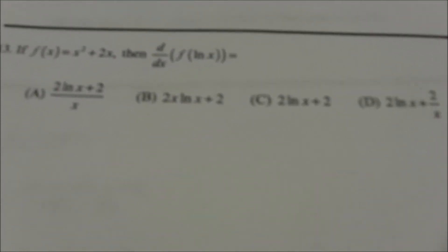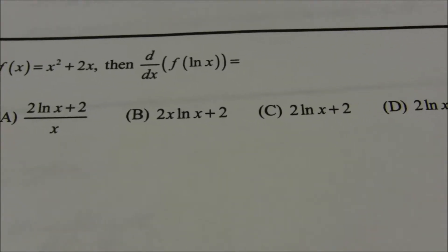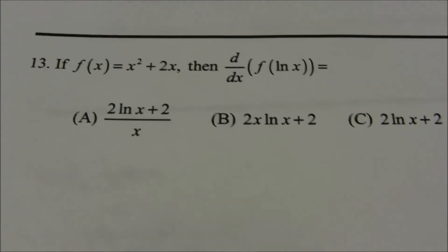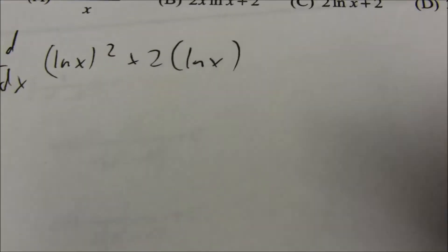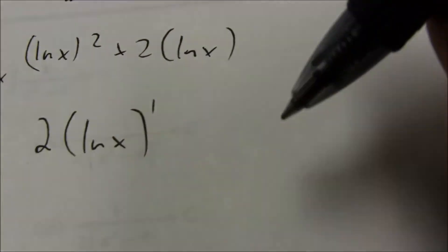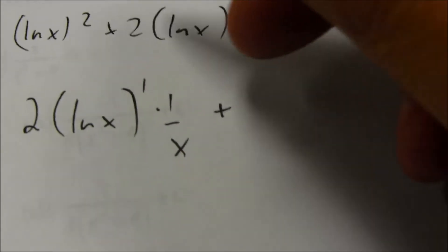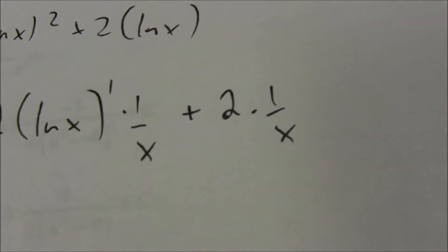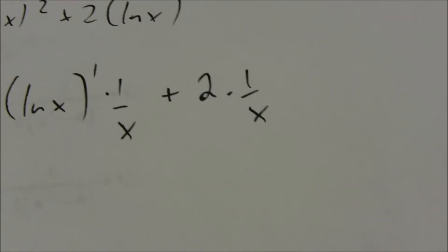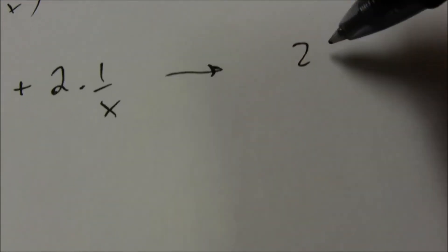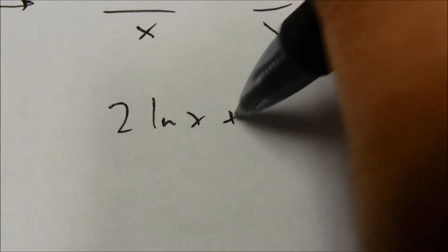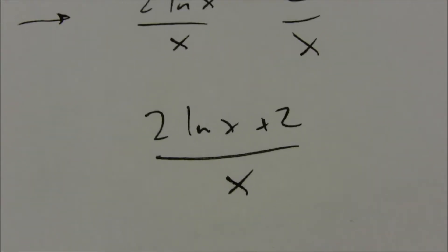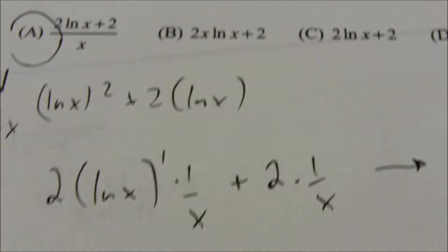Number 13: we want the derivative of f of ln of x, which is ln of x squared plus 2 times ln of x. Taking the derivative: the outside function is squaring, so by the power rule, 2 times ln of x times the derivative of the inside function, 1/x. Then take the derivative of the second part: 2 times 1/x equals 2/x. Writing it as 2 ln x over x plus 2 over x, combining over the common denominator gives 2 ln x plus 2 all over x. That is choice A.